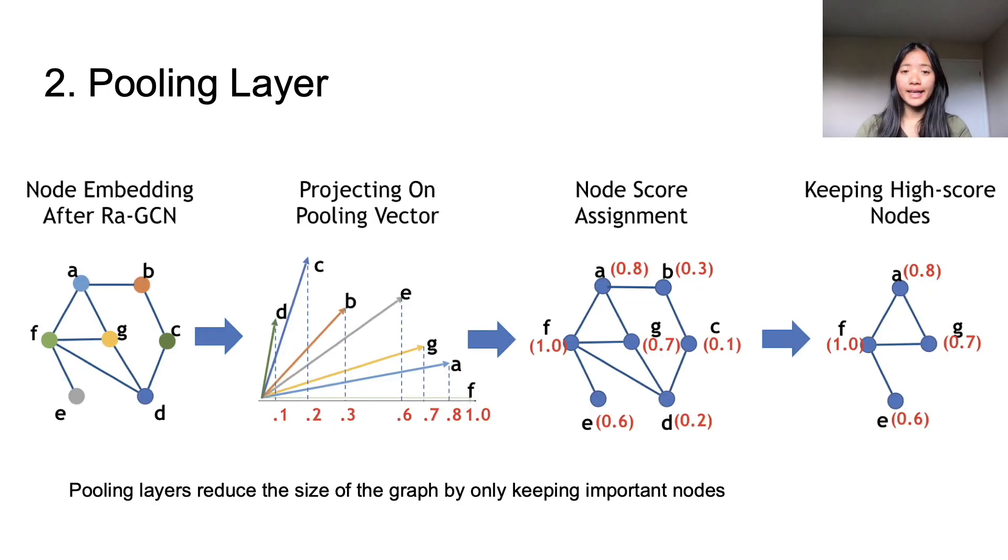The pooling layer is the second step of the graph convolutional network, and this layer reduces the size and complexity of the graph by selecting and only keeping important nodes, as they are the ones that are more likely to identify and predict neurological abnormalities. This occurs by assigning a score between 0 and 1 to each region of interest. The closer the score is to 1, the more likely the node will be kept. I won't go too much into the math, but the score is determined using vector projection of each node onto a trainable pooling vector.